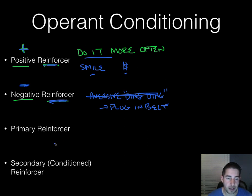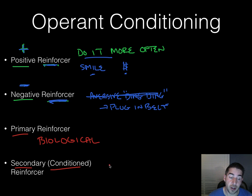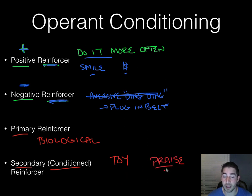There are two types of reinforcers: primary and secondary. Primary reinforcers fulfill some sort of biological need — your basic needs like food and water. Secondary reinforcers, sometimes called conditioned reinforcers, don't satisfy a biological need but still encourage behavior. For instance, giving someone a toy or praise for good behavior — those are secondary reinforcers; they don't fulfill a biological need but encourage behavior nonetheless.